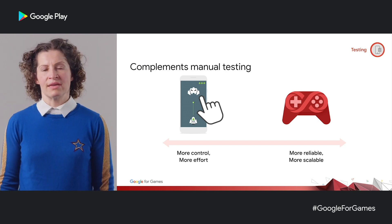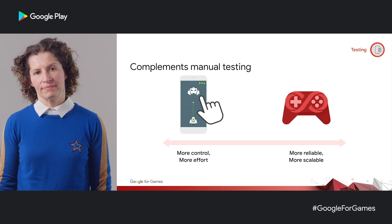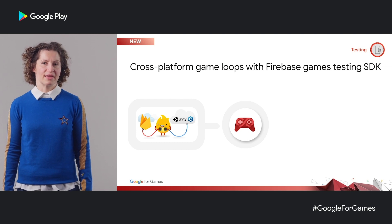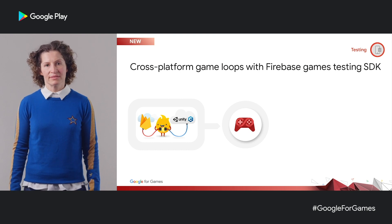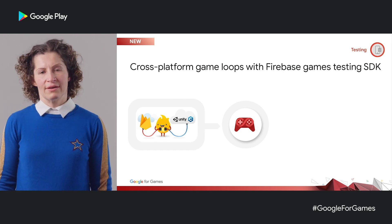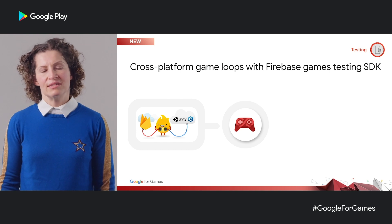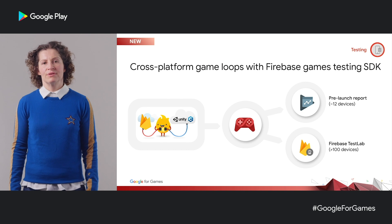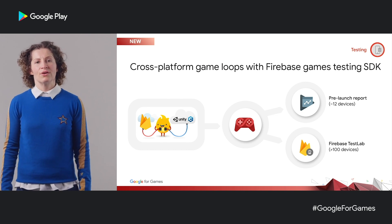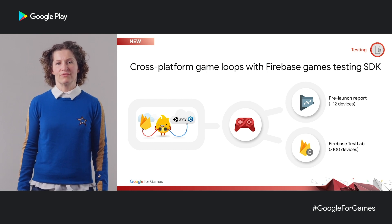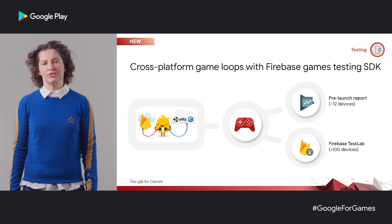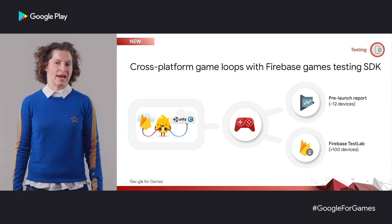We're also making a major improvement to game loops to make it easier for you to use them. In the next version of the Firebase game SDK, you will be able to write game loops in a platform-independent manner — you write them once, then use them across Android, iOS, and your desktop. If you're using Unity, we're providing a plugin which will make it even easier to adopt. Once you have your game loop, you can execute it in a number of ways: you can get a pre-launch report automatically on the Play Console if you release to test tracks, or you can use Firebase Test Lab to increase the breadth of your device testing and do testing cross-platform. And of course, you can run them locally too.